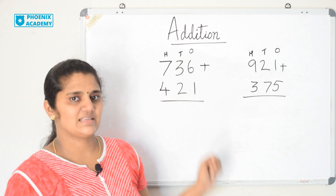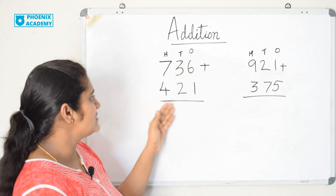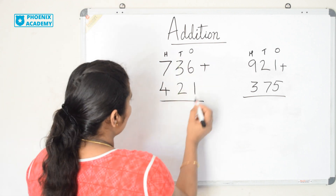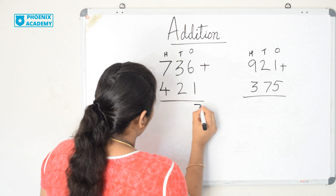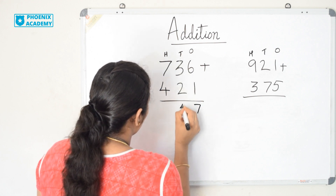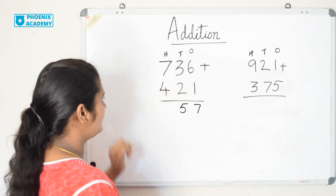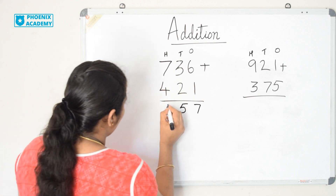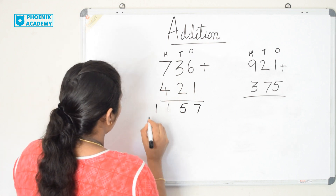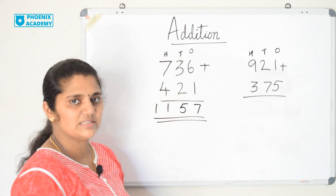Let us try these examples. 736 plus 421. Let us add ones first: 6 plus 1 is 7. Add tens: 3 plus 2 is 5. Add hundreds: 7 plus 4 is 11. So we write 1 in the hundreds position and 1 in the thousands position. The answer is 1,157.